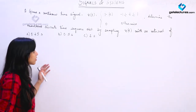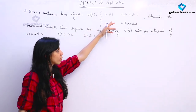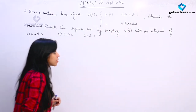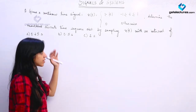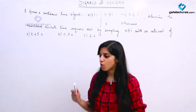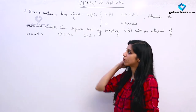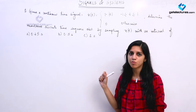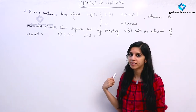We are given a question: there is a continuous time signal x(t) defined as 1 minus |t| for time intervals between minus 1 and 1, and otherwise its value is 0. They are asking us to determine the corresponding discrete time sequence obtained by sampling this signal with different sampling intervals. We have already seen that a discrete time sequence can be obtained by sampling a continuous time signal with a specific sampling interval to obtain a corresponding discrete time signal.